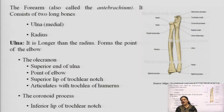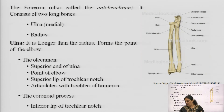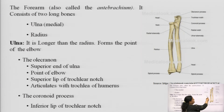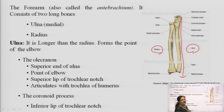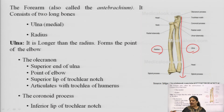The forearm, also known as the antebrachium, consists of two long bones. The first is the ulna, which is medially located alongside the radius. Radius is shorter and thicker compared to ulna. Ulna is the longer bone — you can see its greater length in the diagram. Ulna is longer than the radius and forms a point starting from the elbow.